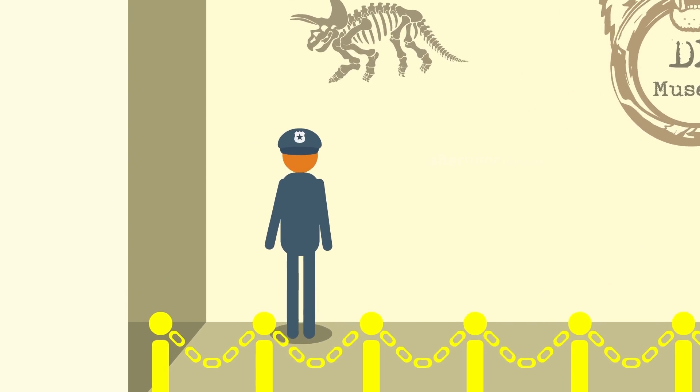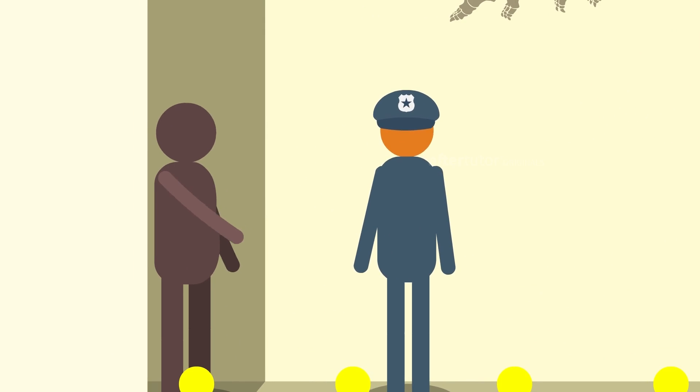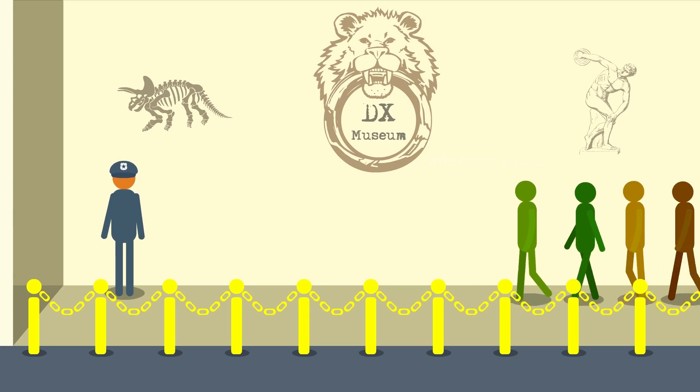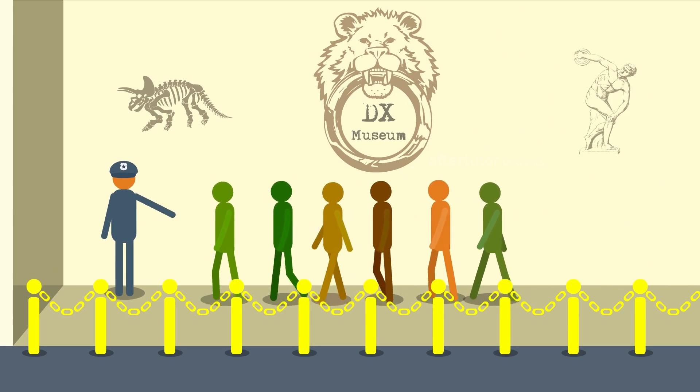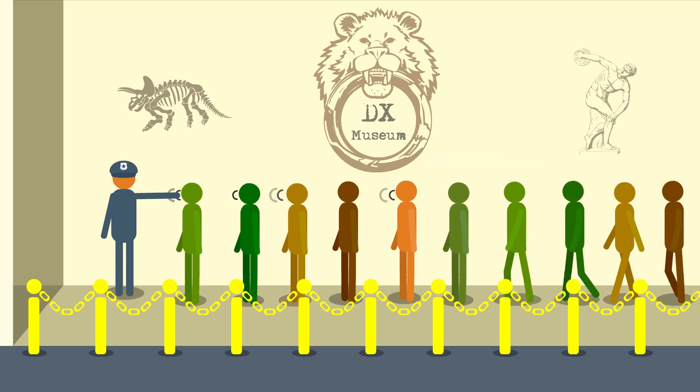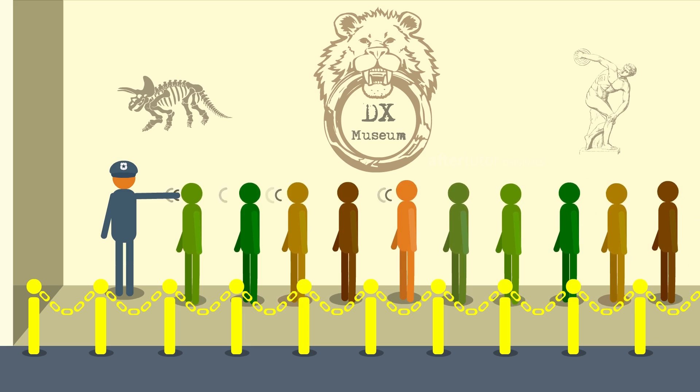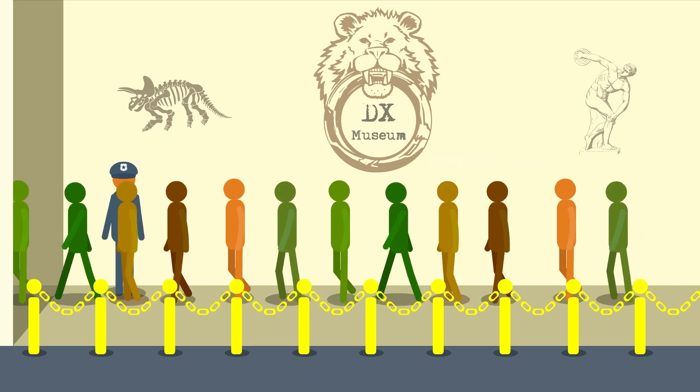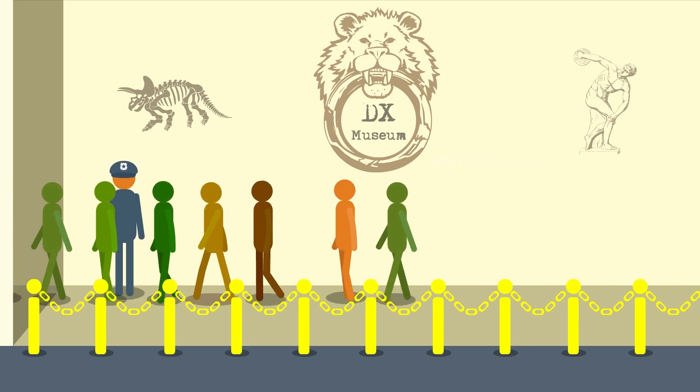In a museum, due to some reasons, a security guard was ordered to allow only 10 people to the entrance at a time. At the beginning, six people came to visit the museum, but they were not allowed inside by the security guard as instructed by the superiors. In a few minutes, another group of people came, which was more than 10. At this point, the security guard allowed 10 people among the group, which was his default constraint.